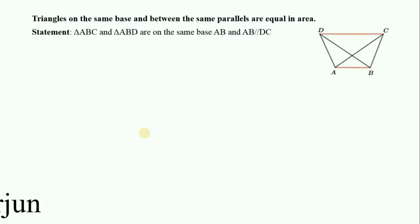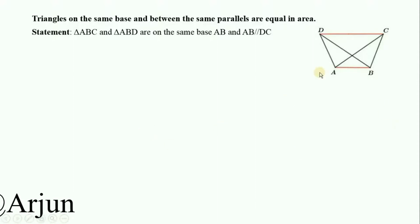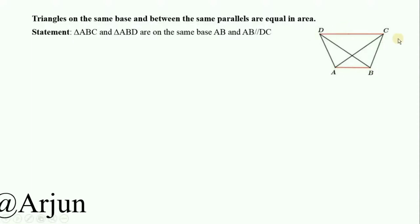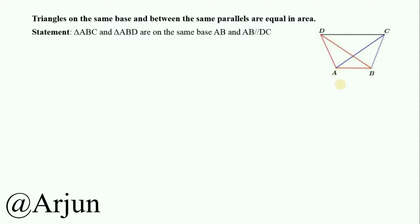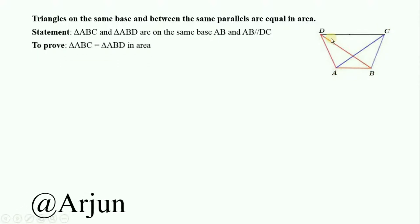Triangle ABC and triangle ABD are on the same base AB, with AB parallel to DC. In this figure, AB is the base, and AB and CD are two lines parallel to each other. We have to show that triangle ABC is equal in area to triangle ABD.